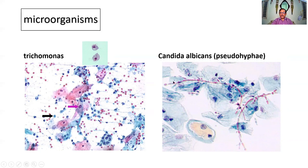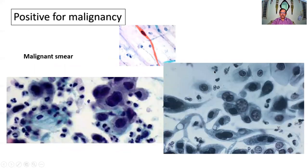Candida albicans has two forms: one is the budding form, and another is the pseudohyphae form. You can see breaks in the filaments, because it is multiplying through pseudohyphae formation. These are the two organisms to remember.